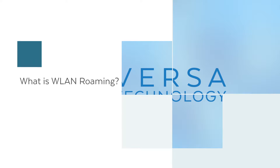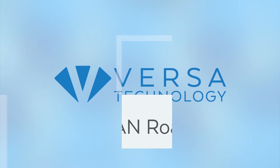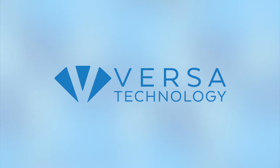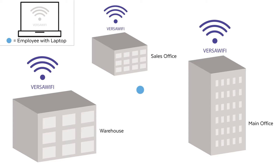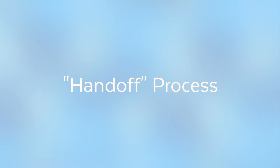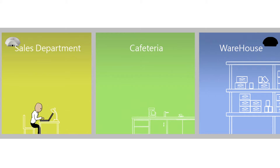What is WLAN roaming? WLAN roaming automatically connects a client device in motion to an alternative access point without interrupting a Wi-Fi connection. This is known as the handoff process. The handoff process consists of the following steps.